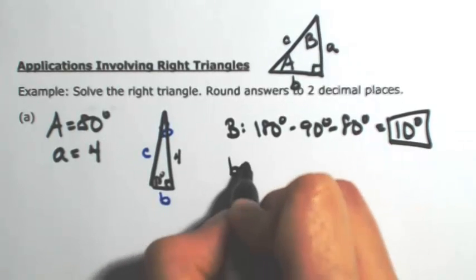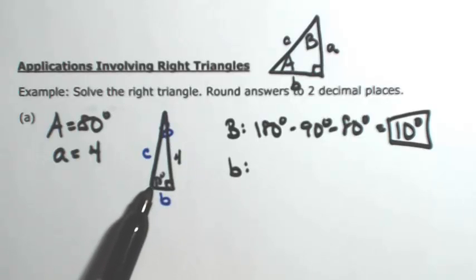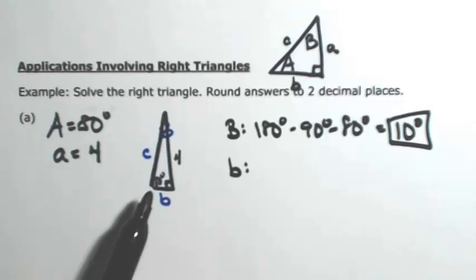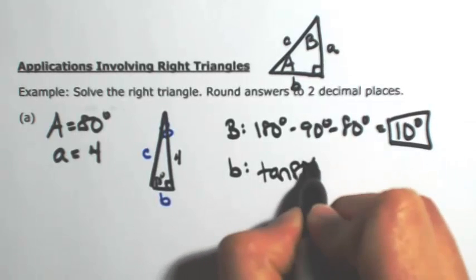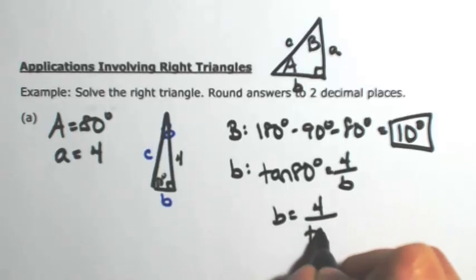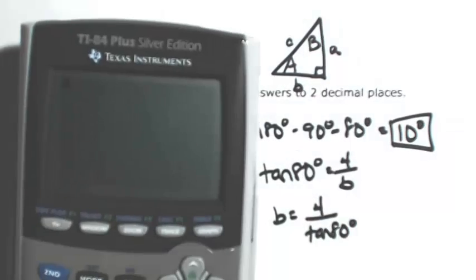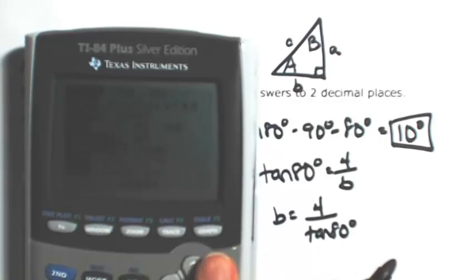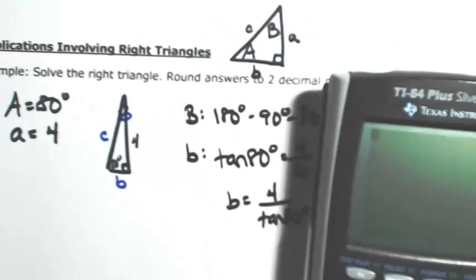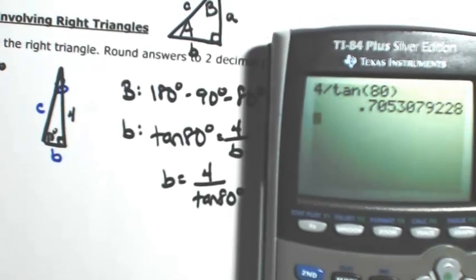To find side b, I'll use right triangle trigonometry with the given information. The 80 degrees, combined with what I'm looking for, calls for the tangent function, because we have the opposite side and we're looking for the adjacent side. So the tangent of 80 degrees equals opposite over adjacent, which is 4 over b. Solving for b gives us 4 over the tangent of 80 degrees. On my calculator, I'll make sure I'm in degree mode, then compute 4 divided by tangent of 80, which is about 0.71.